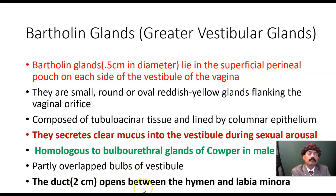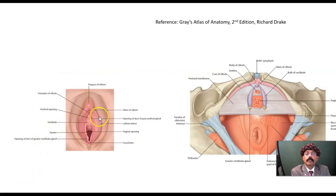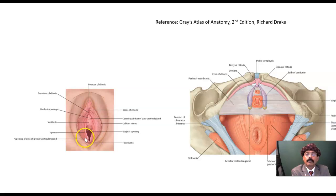The ducts open between the hymen and the labia minora, on the posterolateral aspect of the vestibule of the vagina. Here is the labia minora and this is the hymen. The opening of the duct of the greater vestibular gland is on this side, and the other is on that side — approximately at the eight o'clock position and four o'clock position.